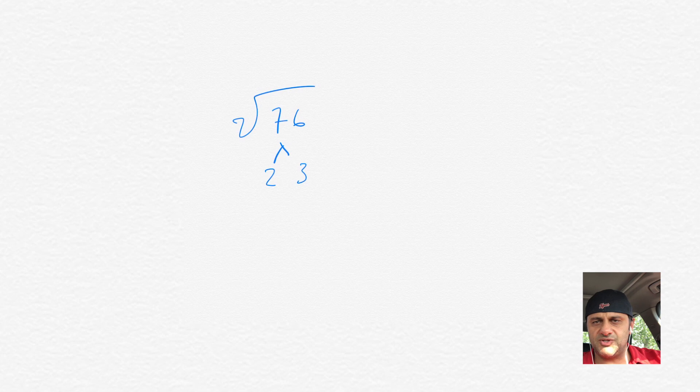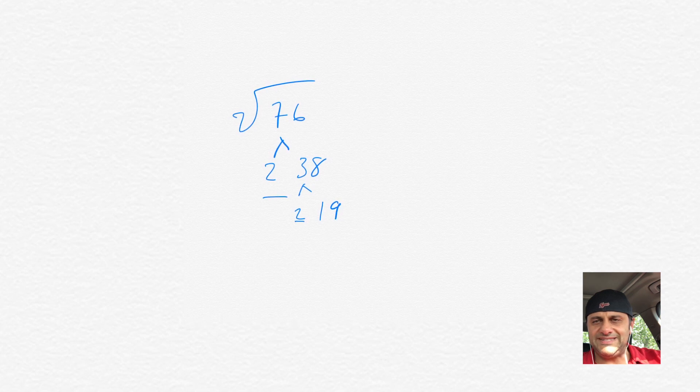Let's do some more examples. Square root of 76, that could be broken down to 2 times 38, and 38 could be broken down into 2 times 19. And as you can see there, there's a pair of 2s, and there's a 19.